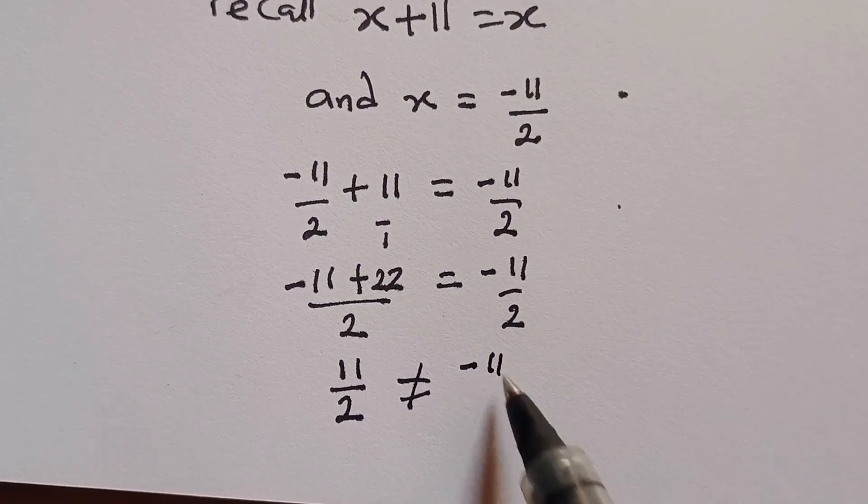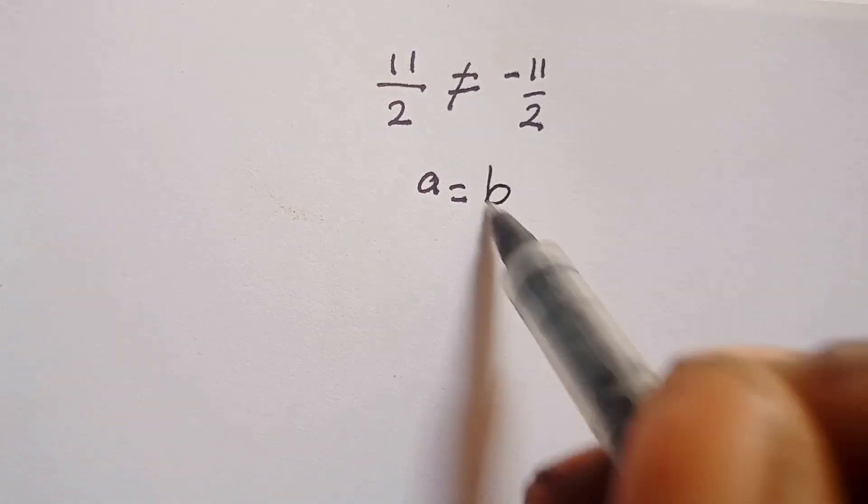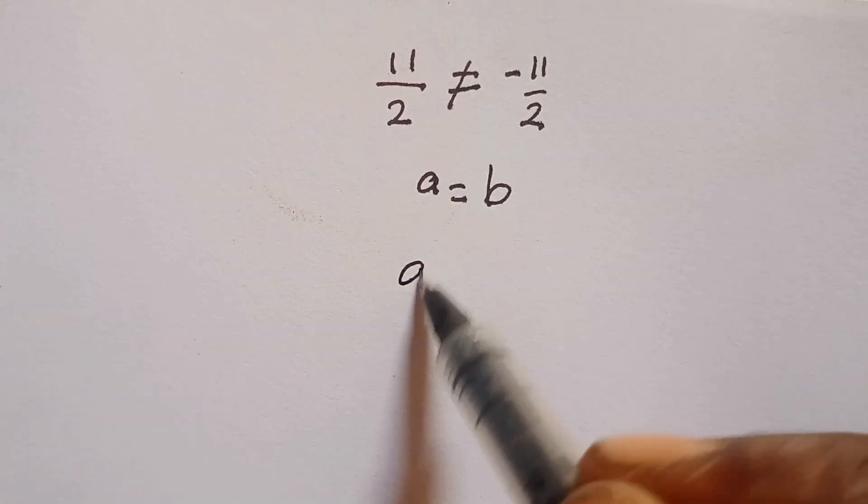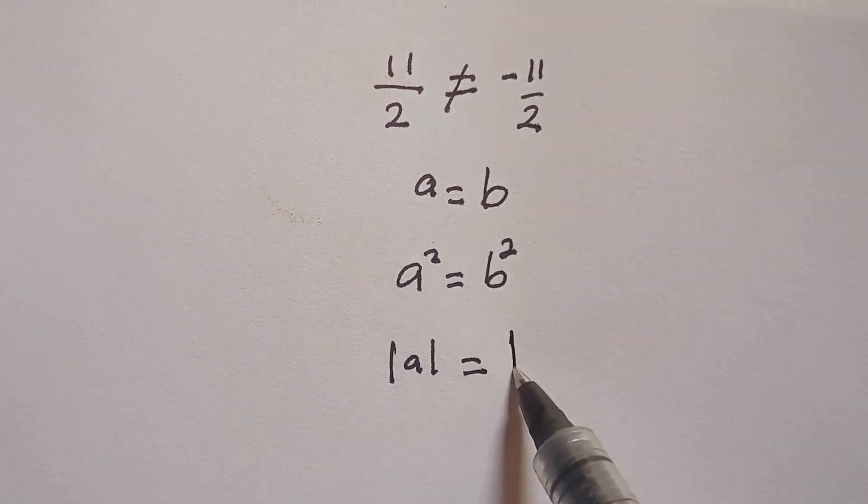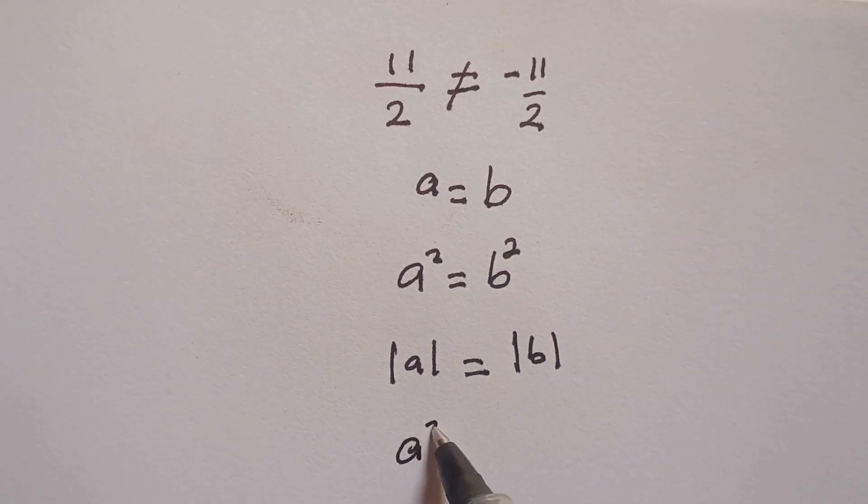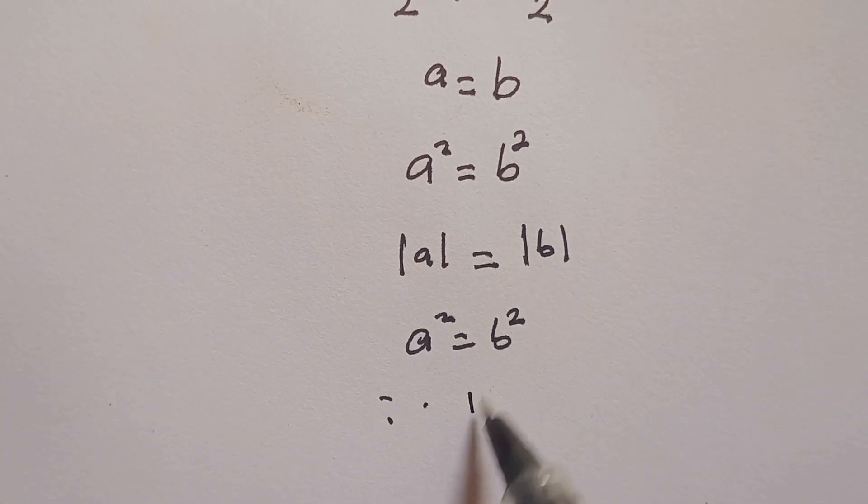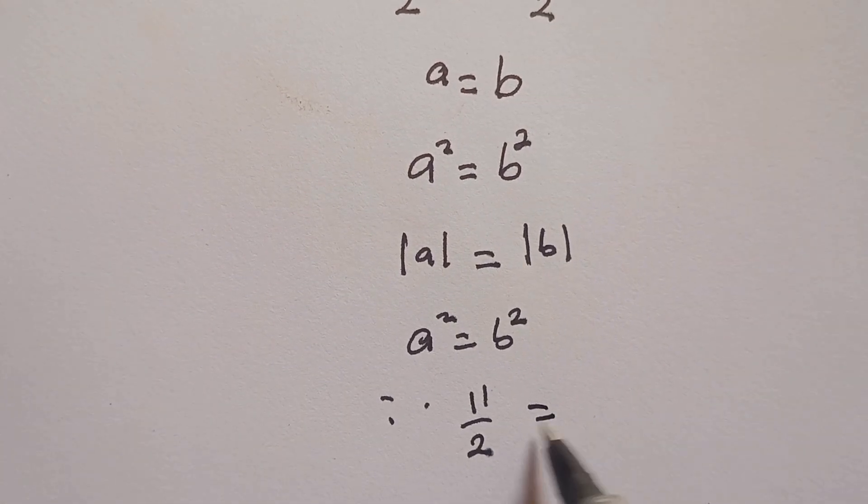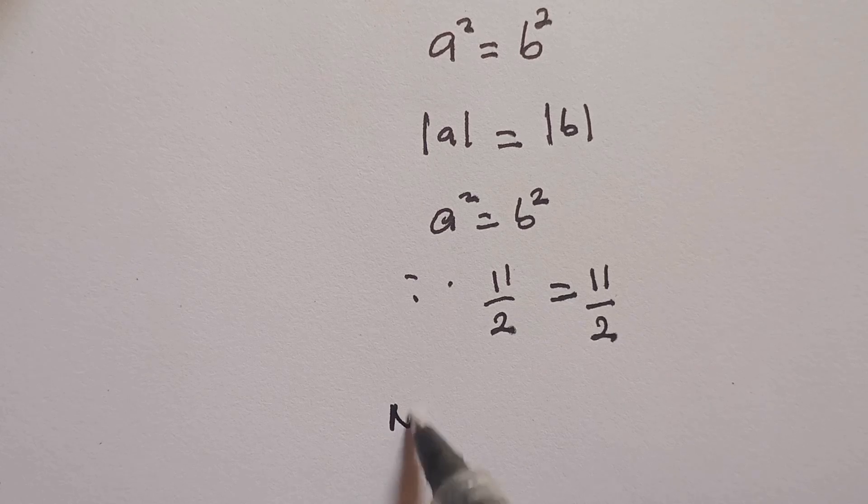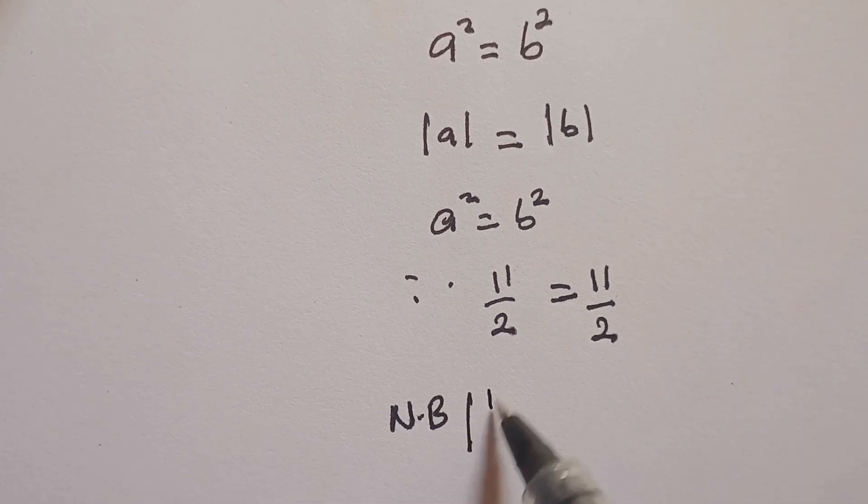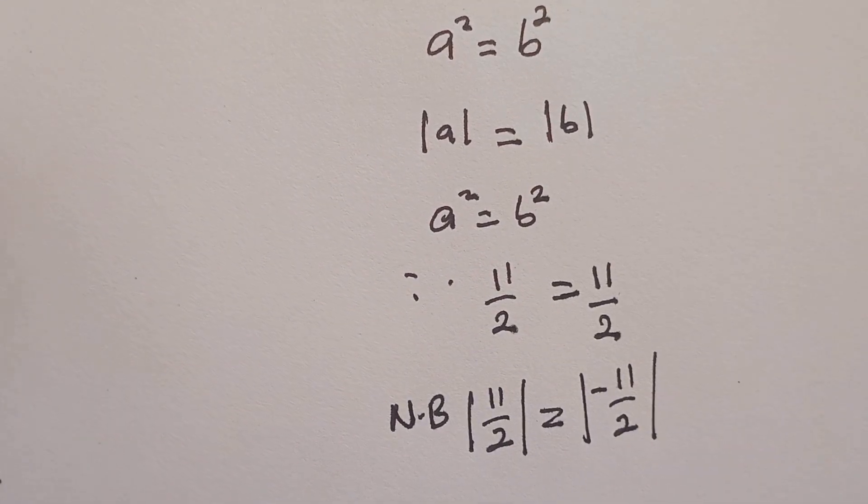But now let's do some mathematical simplification. We have if a squared equals b squared, then absolute value of a equals absolute value of b. If we apply absolute value to the answer that we have, therefore 11 over 2 will be equal to 11 over 2. You just need to know absolute value 11 over 2 is same as absolute value of minus 11 over 2. Thank you for watching, don't forget to subscribe to this channel.